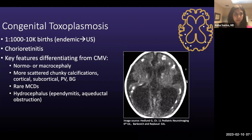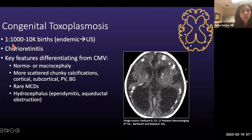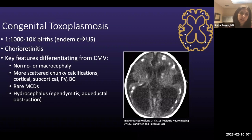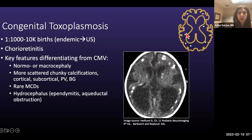Moving to congenital toxoplasmosis — more rare than CMV, especially in the US, but may occur in up to one in a thousand patients in endemic areas. An important clinical manifestation is chorioretinitis. Key features on imaging: rather than microcephaly, patients are normal or even macrocephalic due to hydrocephalus from ependymitis and aqueductal obstruction. The character of calcifications differs — you see cortical, subcortical, periventricular, and basal ganglia calcifications, unlike the purely periventricular pattern in CMV. Cortical malformations are rare; hydrocephalus is very common.